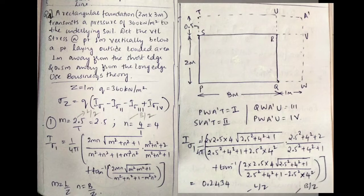Final problem: a rectangular foundation 2m × 3m transmitting pressure q equal to 360 kN/m². Determine the vertical stress at a point 1 meter vertically below a point outside the loaded area — 1 meter away from the short edge and 0.5 meter from the long edge — using Boussinesq theory. Here z equals 1m.